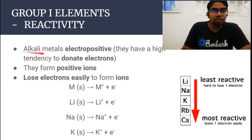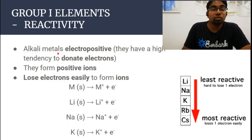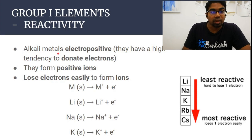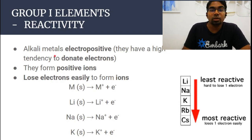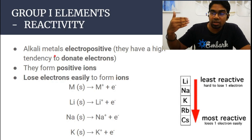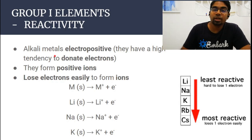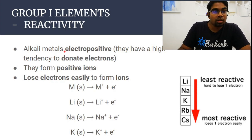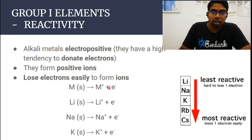Alkali metals all have electron configurations such as 2,1 or 2,8,1 or 2,8,8,1. Their outer shell has one electron, so they just have to donate that one electron to become stable. Therefore, they all form positive ions because they donate electrons.